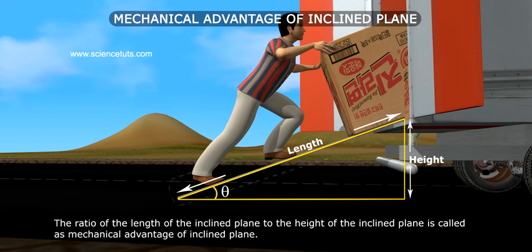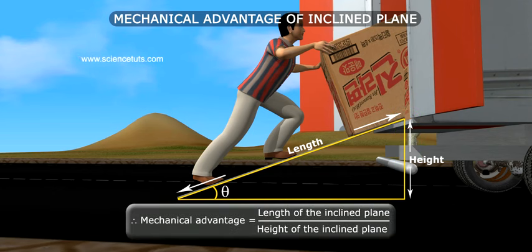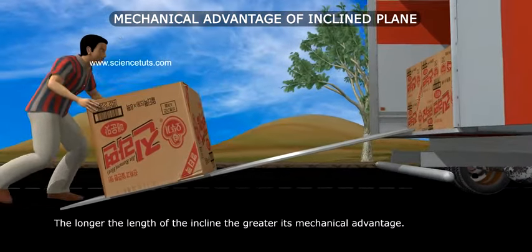The ratio of the length of the inclined plane to the height of the inclined plane is called as Mechanical Advantage of Inclined Plane. Therefore, Mechanical Advantage is equal to Length of the Inclined Plane by Height of the Inclined Plane.